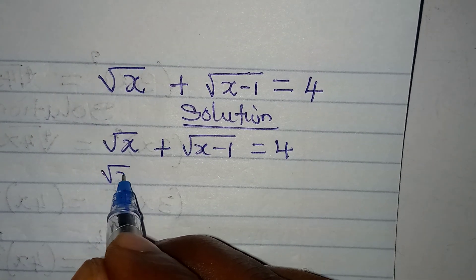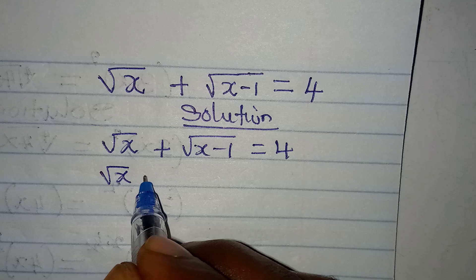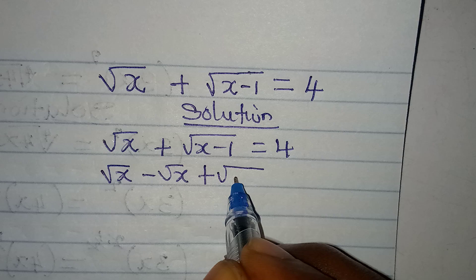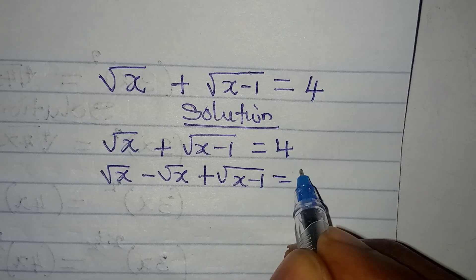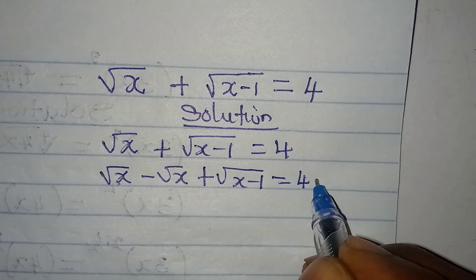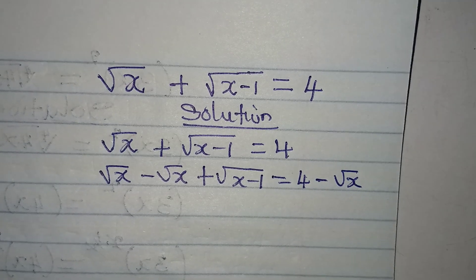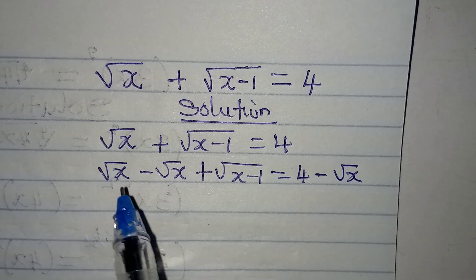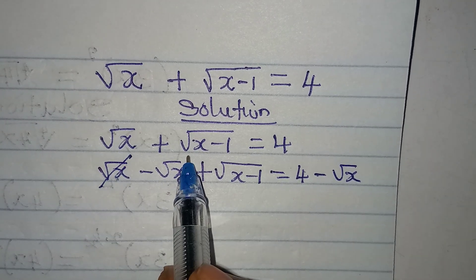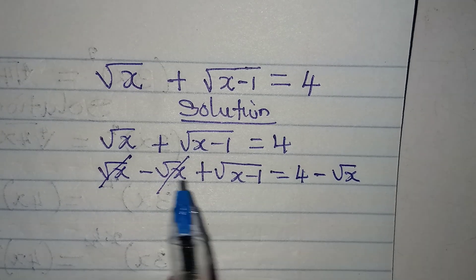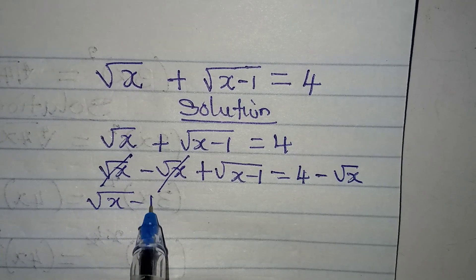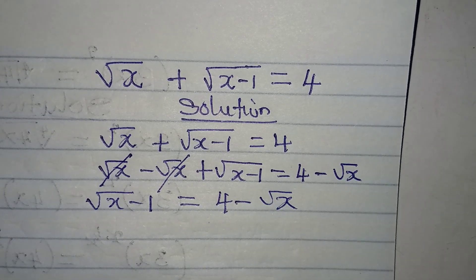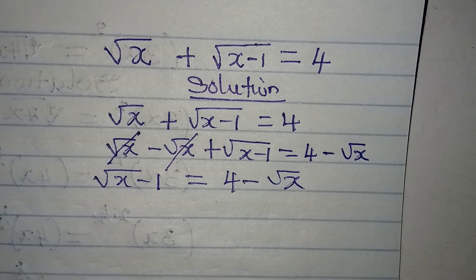We subtract square root of x from both sides so that it cancels from the left side. Then we have square root of x minus 1 equal to 4 minus square root of x.